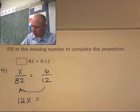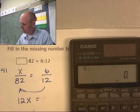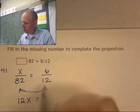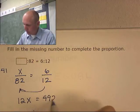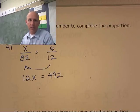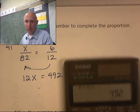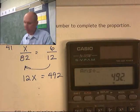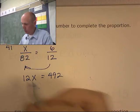Let's use down equals up. 12x, there's my down, equals 6 times 82, 492. And then I would divide both sides by 12. So 492. Where's that? 492 divided by 12, 41.